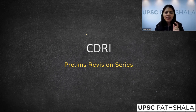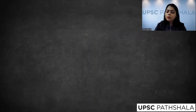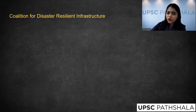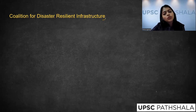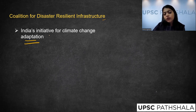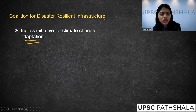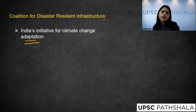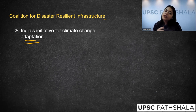CDRI stands for Coalition for Disaster Resilient Infrastructure and it was introduced in 2019. It is India's initiative for climate change adaptation — and note the word 'adaptation.' We are not trying to mitigate climate change here. We have accepted that climate change is going to happen, it is very real, it is going to have some disastrous impact, and we have to be ready for that impact.